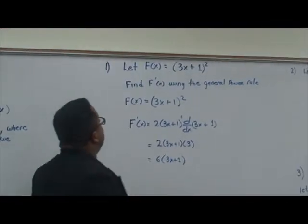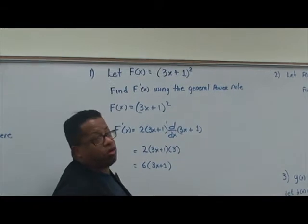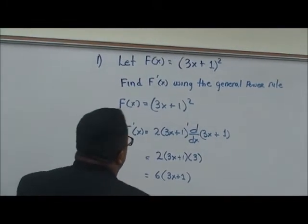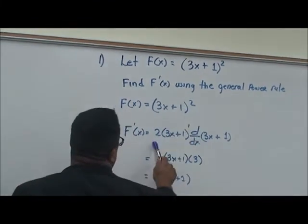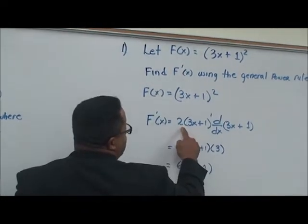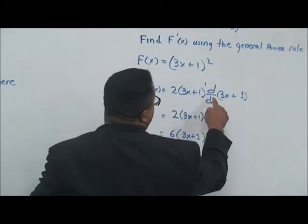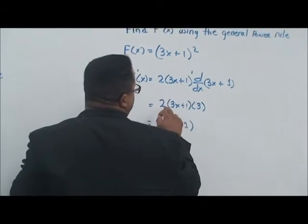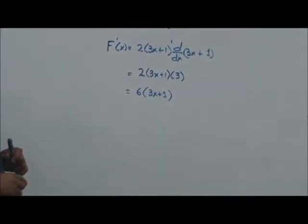Let's do a couple of problems. Let f of x equal to 3x plus 1 squared. Find f prime of x using the general power rule. We have f of x equal to 3x plus 1 squared. We take the derivative of the outside term — by the power rule, the 2 comes down and the exponent becomes 1. The inside function stands fast. Now we take the derivative of the inside function, which gives us 3. So we have 2 times 3x plus 1 times 3, which simplifies to 6 times 3x plus 1.